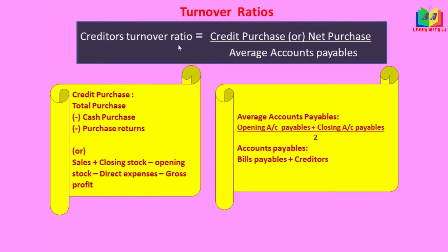The first one is the creditor turnover ratio, and the formula is credit purchase or net purchase divided by average accounts payables. In the absence of credit purchase we can use net purchase. Credit purchase is total purchase minus cash purchase minus purchase returns. Another way to find credit purchase is: sales plus closing stock minus opening stock minus direct expenses minus gross profit. We use direct expenses if it is given in the problem.